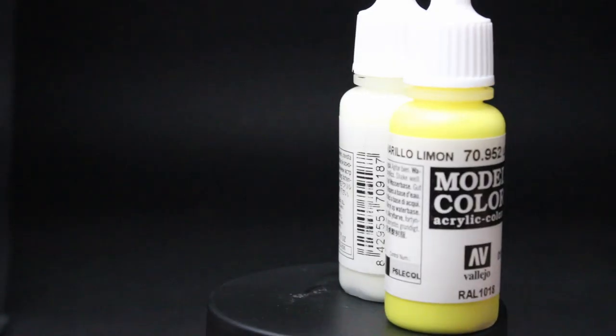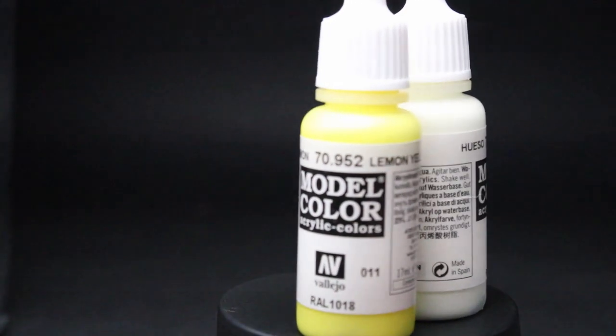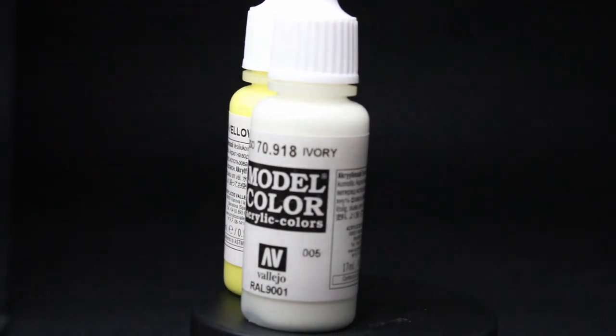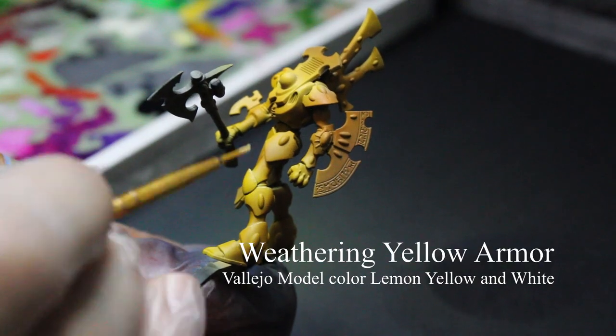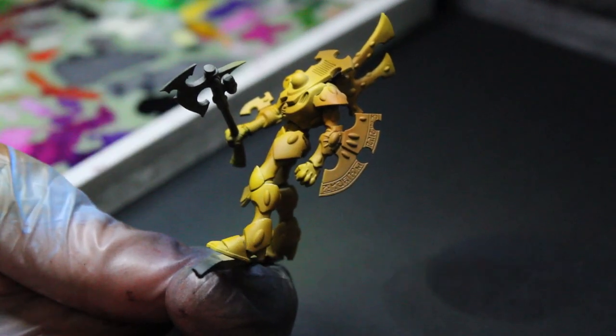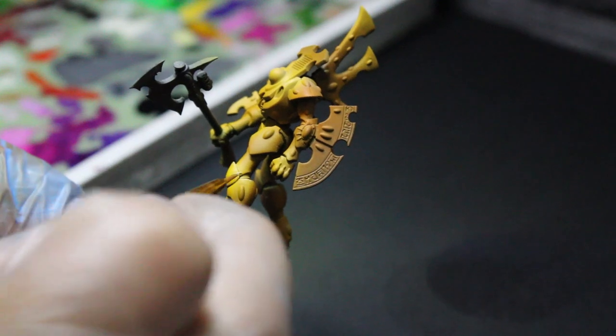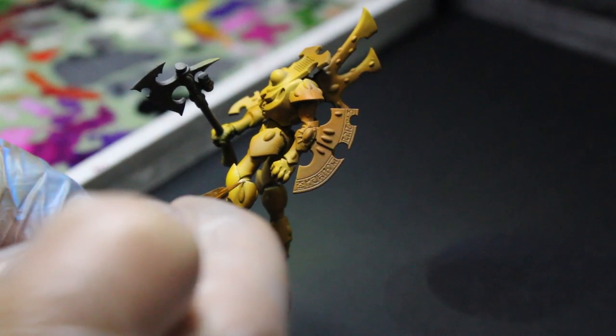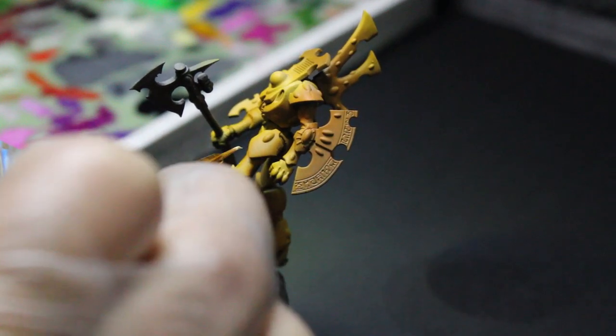The final step for the yellow armor is to weather it using nicks and scratches painted on with a roughly 3 to 2 ratio of Vallejo White or Ivory and Lemon Yellow. The trick here is to be very random. Use stippling, dragging, and dry brushing to get an aged look, or get a very fine tip on your brush and randomly paint very small scratches.